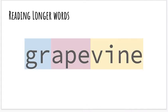Let me show you how I did it. I see the digraph G-R — gr. Then I see 'ape' — grape. Grape, vine. What does it say? Grapevine. Awesome.